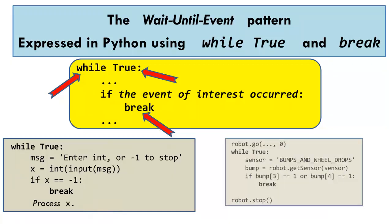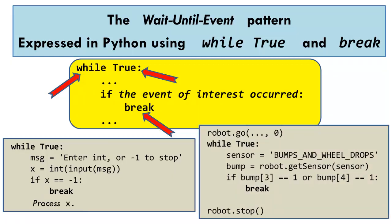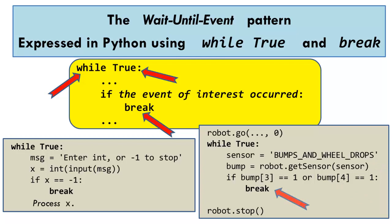On the right is the Python implementation of our robot-go-until-it-bumps-something example. The robot starts moving, then we enter the WHILE TRUE loop. The robot repeatedly gets sensor input. If the sensor input indicates that the robot bumped into something, the program BREAKs out of the WHILE loop and the robot is asked to STOP. Otherwise, the loop continues and the robot gets sensor input again, checks if it indicates a bump, and so forth. Don't get hung up on the notation for a robot to get sensor input — we'll investigate those details in the robot exercises in class.